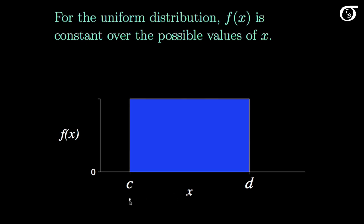Here I'm calling c the minimum value x can take on, and d the maximum value x can take on. c and d are allowed to be any finite values. Any intervals of equal length are equally likely to occur, so it is exactly as likely to get a value in an interval close to c as a value close to d, provided those two intervals are of equal length.